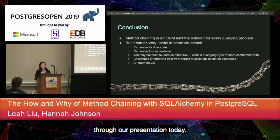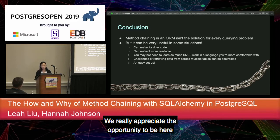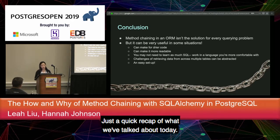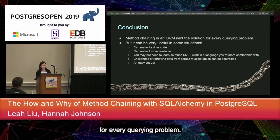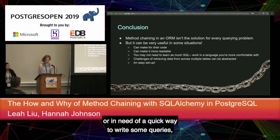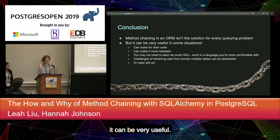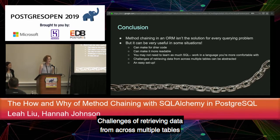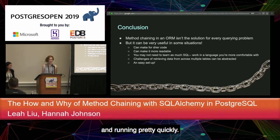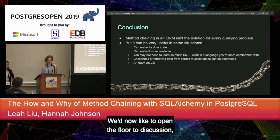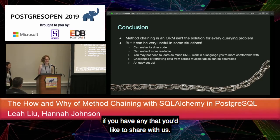Thank you all so much for sticking with us through our presentation. A quick recap: method chaining with ORM is not the solution for every querying problem, but especially for people newer to SQL or in need of a quick way to write queries, it can be very useful. It can make for drier, more readable code, it's relatively easy to set up, you can work in a language you're more comfortable with, challenges of retrieving data across multiple tables can be abstracted, and you can get a project or MVP up and running quickly. Thank you for your time on this Friday the 13th — we'd now like to open the floor to discussion.